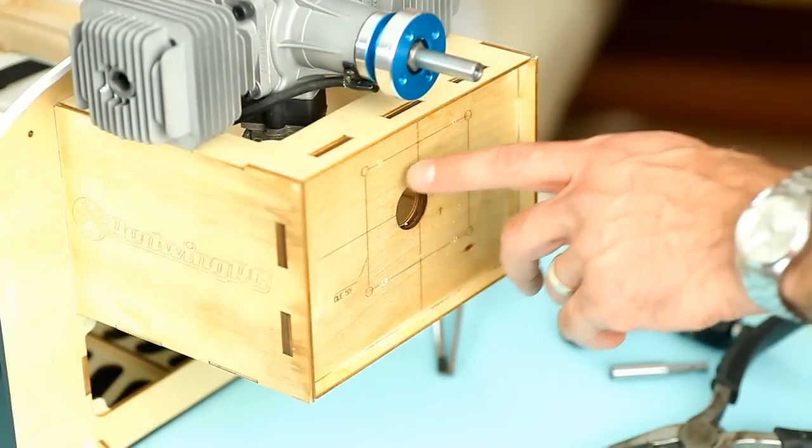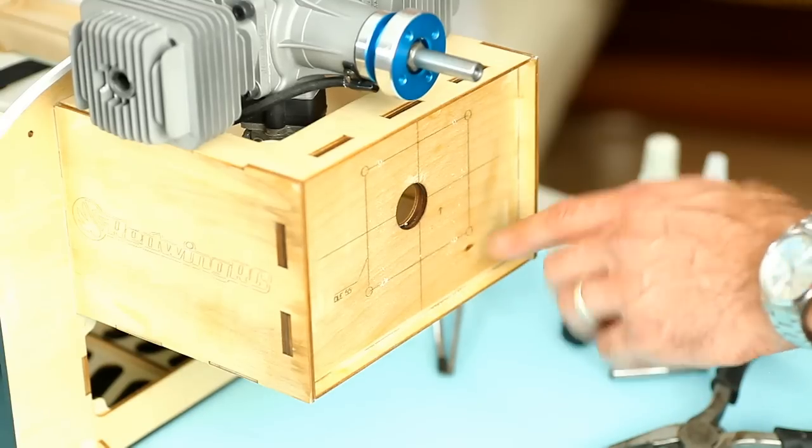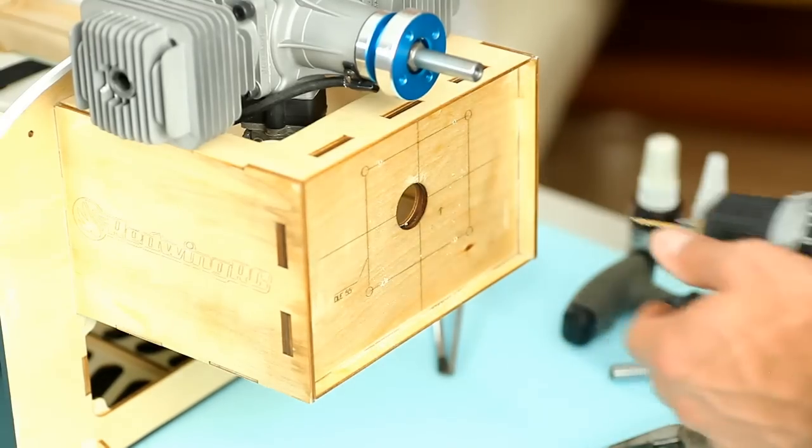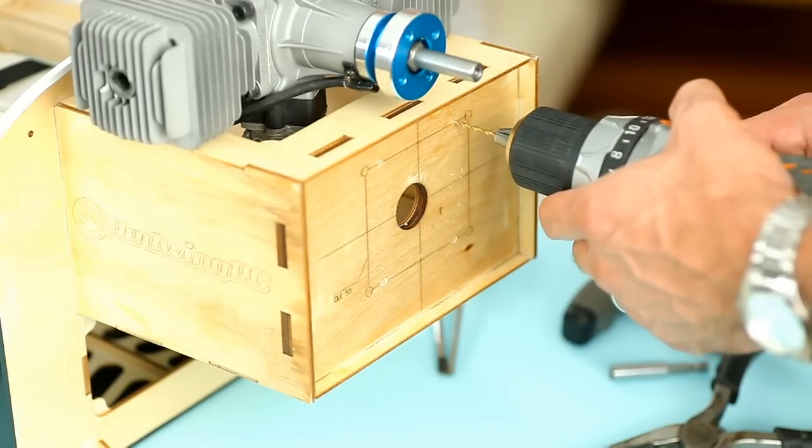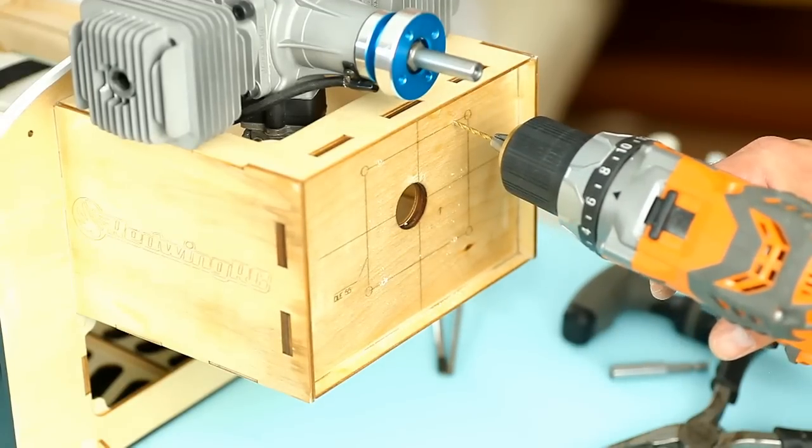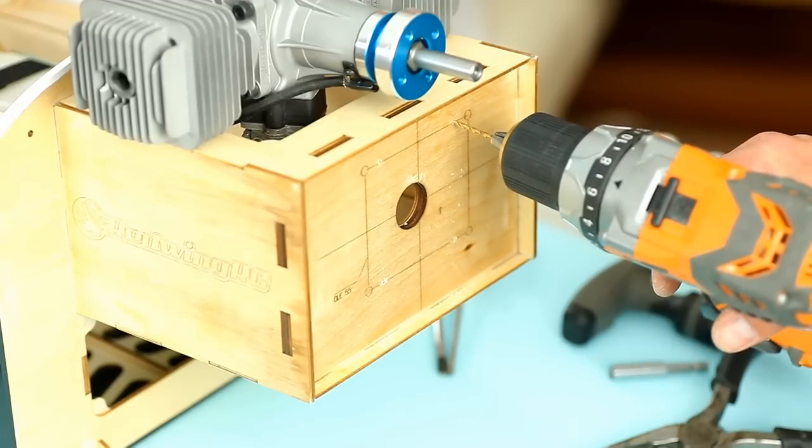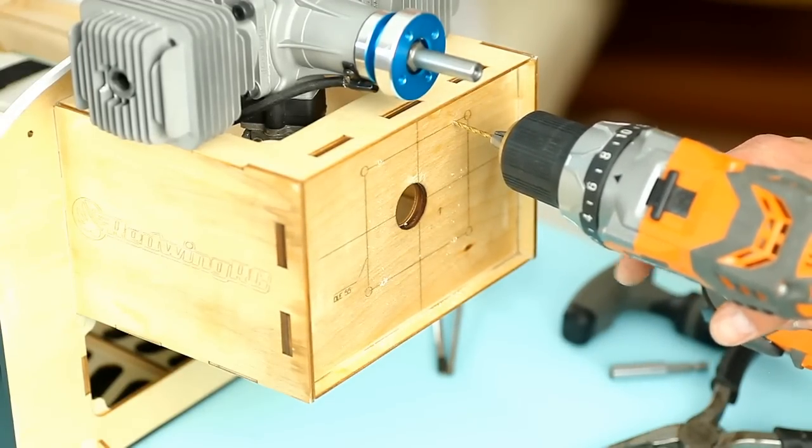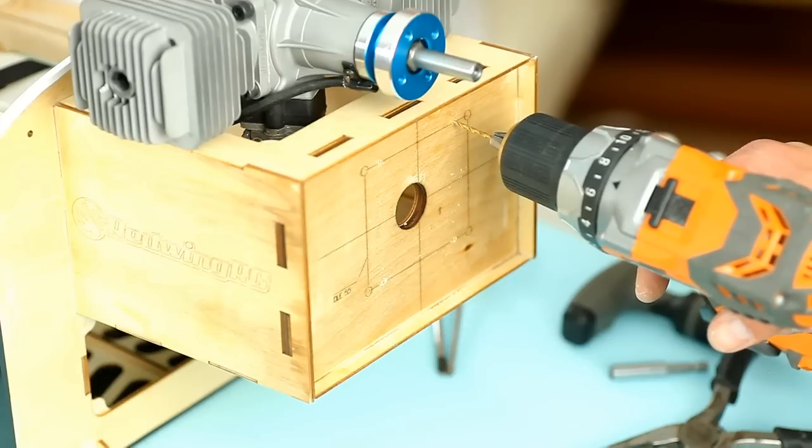Now that you have your 1/16th inch holes drilled in all four holes, you can take your template off and begin stepping up your bits until you get to your final bit size, which for this engine uses 5 millimeter bolts, which is equivalent to about a 13/64th inch bit.